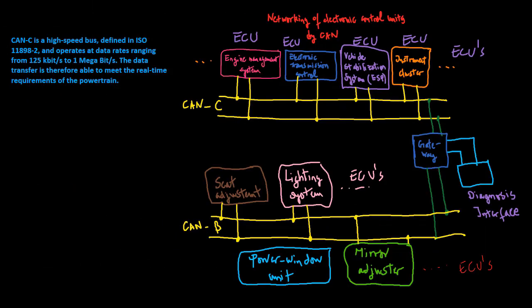The CAN-C is a high-speed bus, defined in ISO 11898-2, and operates at data rates ranging from 125 kbps to 1 Mbps.